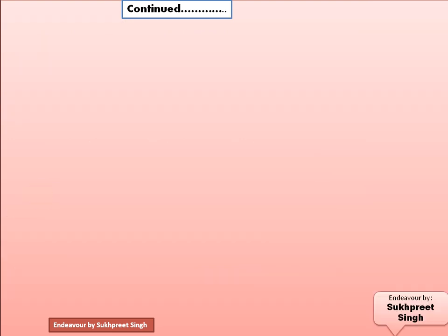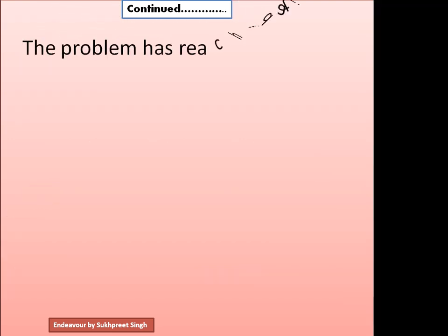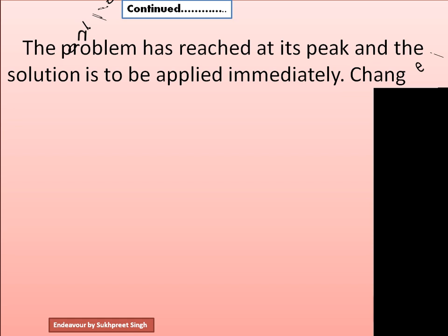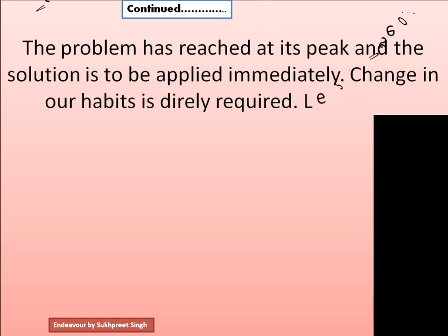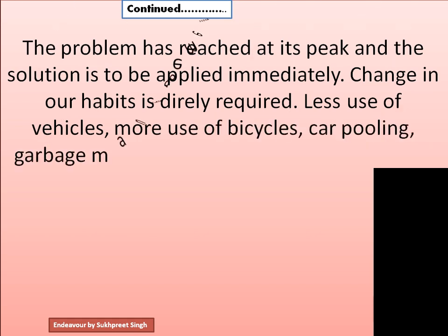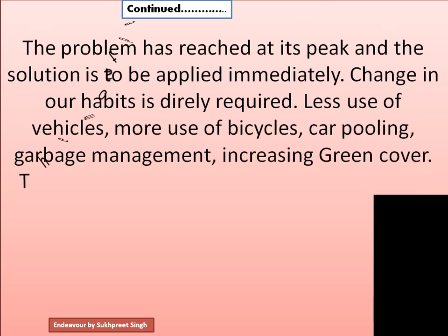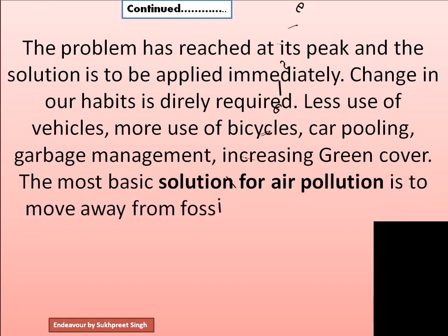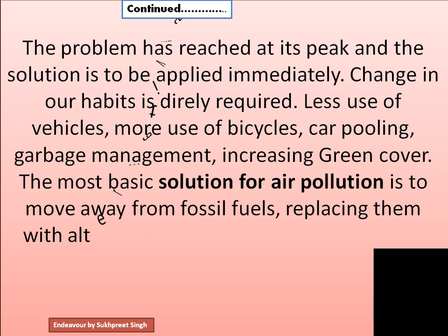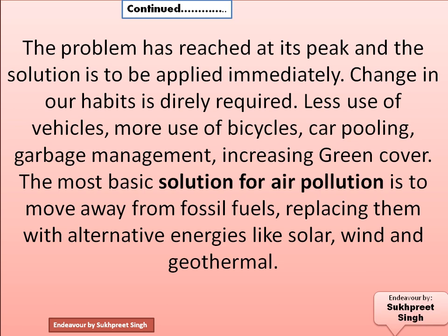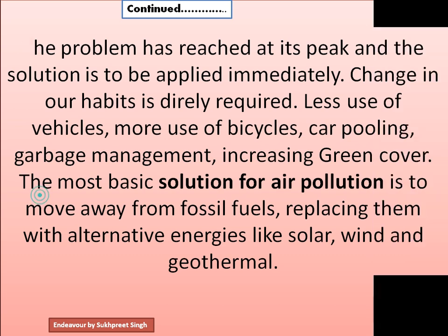Now giving a solution: 'The problem has reached its peak and a solution must be applied immediately. Change in our habits is daily required — less use of vehicles, more use of bicycles, carpooling, garbage management, and increasing green cover. The most basic solution for air pollution is to move away from fossil fuels, replacing them with alternative energies like solar, wind, and geothermal.' This is how the solution paragraph is written to enhance air quality — and this is how article writing goes.